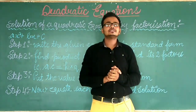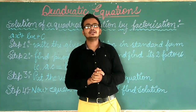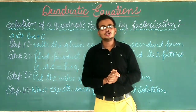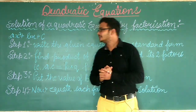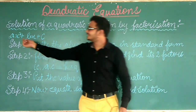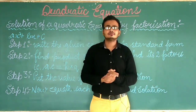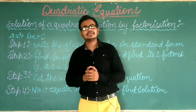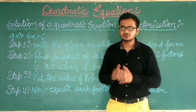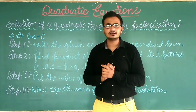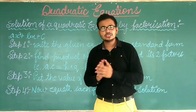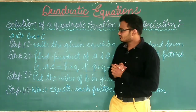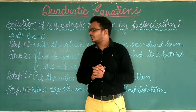Now we will discuss how to solve a quadratic equation with the help of the factorization method. Solving means finding the value of X. We also call this the solution, zeros, or roots. So how to find this?